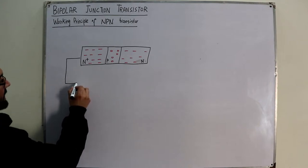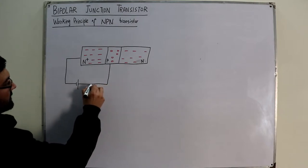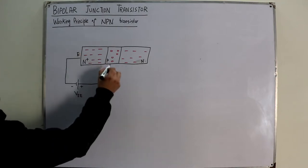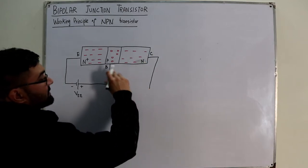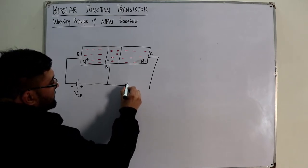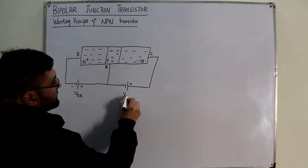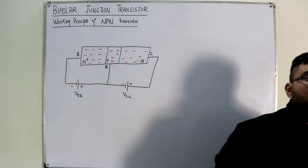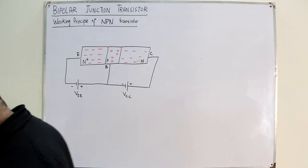Forward biasing means the N side is connected to minus and the P side to plus. If this is the emitter terminal, this is the base terminal, and this is the collector terminal, then the emitter-base junction is forward biased (VE). The collector-base junction, being a PN junction, is reverse biased — with P connected to minus and N to plus — and we name this VCC.